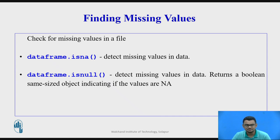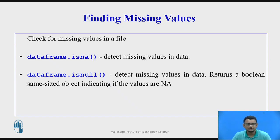Let us talk about missing values. Whenever we use a file, say for example a CSV file in which our data is stored, there are chances that a sensor which is detecting information did not sense the data, and the value it was supposed to take went missing. To detect such missing values we have two functions: dataframe.isna(), which helps us detect missing values in data frames, and dataframe.isnull(), which also does the same work.